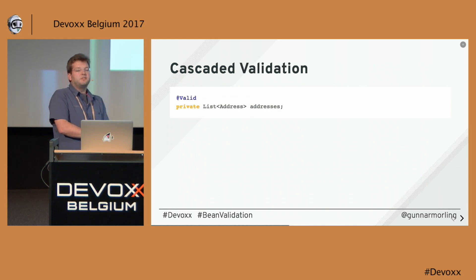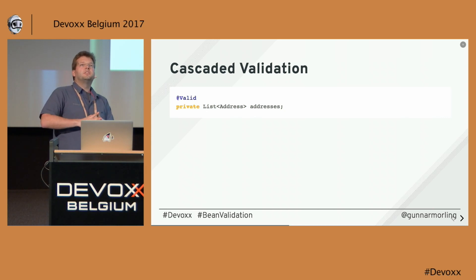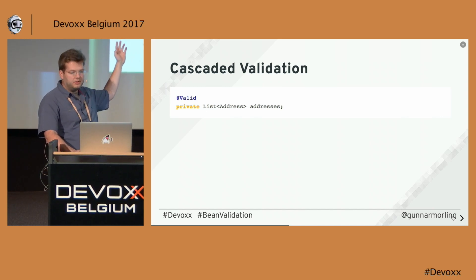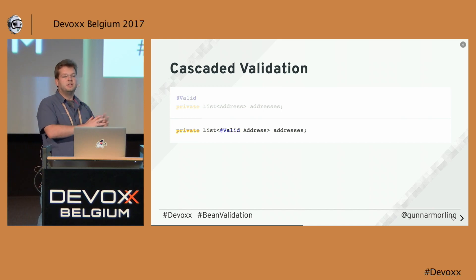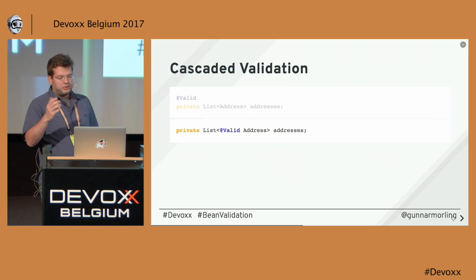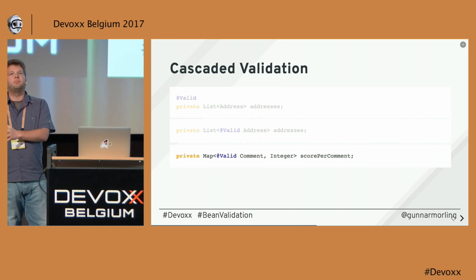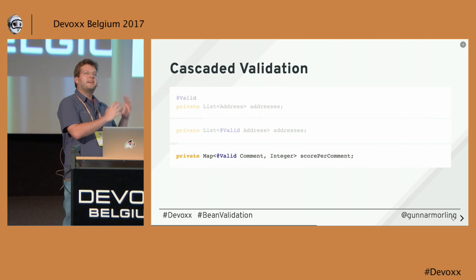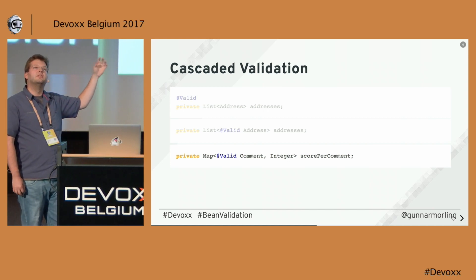We also benefit from type annotations for cascaded validation. This has always existed in Bean Validation — it means you can traverse into an object graph and validate all constraints using the @Valid annotation. In Bean Validation 2, you can put the @Valid annotation on the type argument. The semantics are mostly the same, but it's more apparent that this applies to constraints defined on the Address type. It's more interesting for maps: previously only map values could be cascaded, but now you can also enforce cascaded validation of the keys of a map.